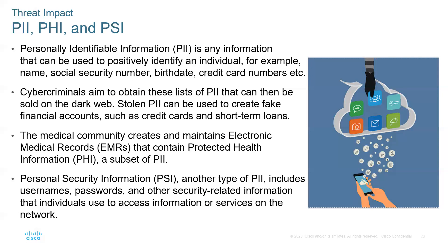We also have personal security information, or PSI — another type of PII. This includes your usernames, passwords, and other security-related information that individuals use to access information and services on a network. We use social engineering — which we'll talk about — in order to gather this information.